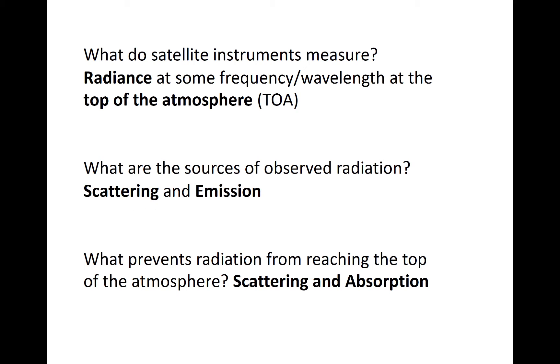Processes that reduce the radiance observed by a satellite are absorption and scattering away from the path toward the satellite.